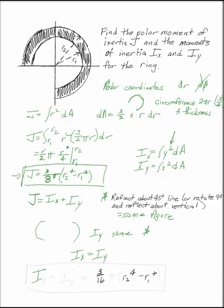Once you do that, you can just say that each of them has to be half of J. IX equals IY equals (3/16)π(r₂⁴ - r₁⁴).